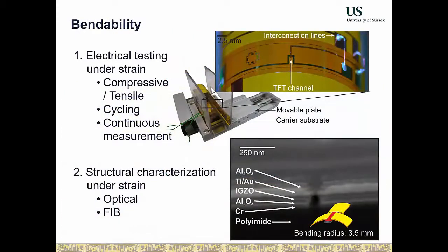We characterize mechanical properties in two ways. First, a setup that allows measuring transistor characteristics while bending — compressive and tensile at different radii — without re-establishing contact. Second, when we see modifications in electrical performance, we use structural analysis, most often focused ion beam cross-sections, to look at the device stack while bent and identify which layers crack.